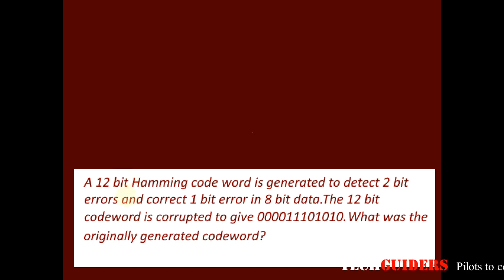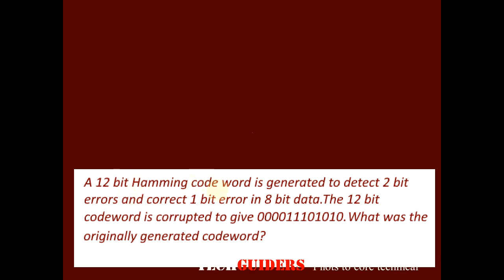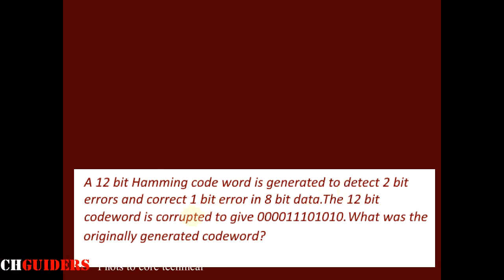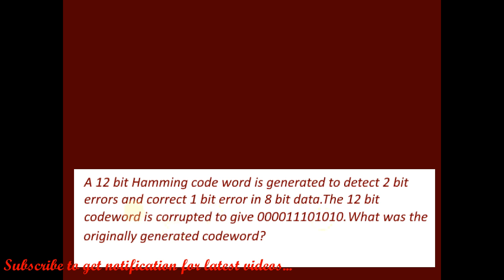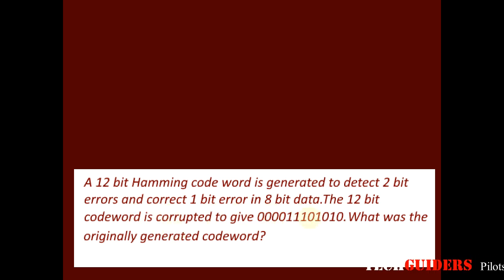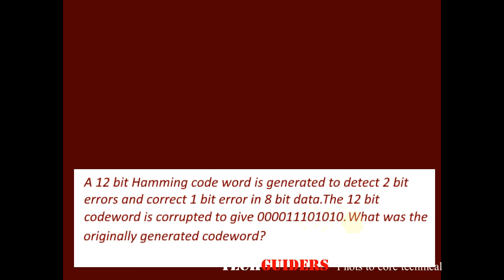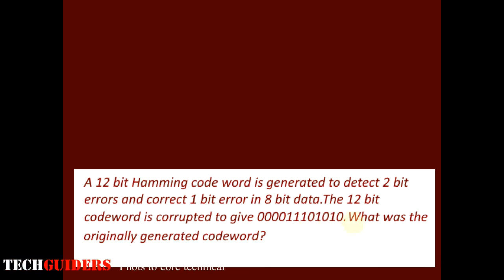Consider this question. A 12-bit Hamming code word is generated to detect 2-bit errors and correct 1-bit error in 8-bit data. The 12-bit code word is corrected to give 000011101010. What was the originally generated code word?